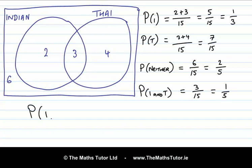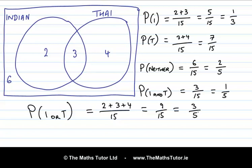What about the probability of someone who likes Indian food or Thai food? That's 2 plus 3 plus 4, divided by 15, so 9 out of 15, which is 3 over 5. We can write these probabilities into the Venn diagram: 2 over 15 for Indian only, 1 over 5 for the overlap, 4 over 15 for Thai only, and 2 over 5 for neither. If we add all these up, we get 1.